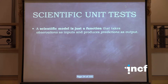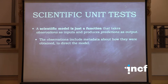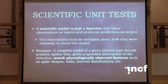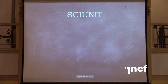What does that mean for science? A scientific model can be viewed as a function that takes some observation as input to parameterize the model and produce predictions. The observations would hopefully include metadata to direct the model — for example, if I tell you the firing rate was 20 hertz, you need to know the conditions. For a complete model of a cell type, you'd want it to replicate things observed experimentally, like spike shapes, rates, and interspike interval distributions. Scientific unit tests encode each of those features in a single test, with a suite of tests to test your model. That's what SciUnit is all about.